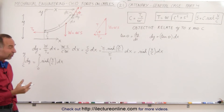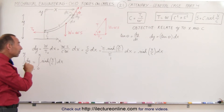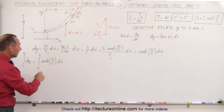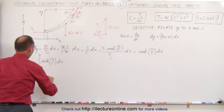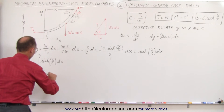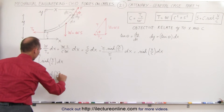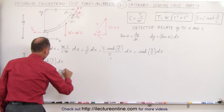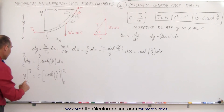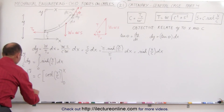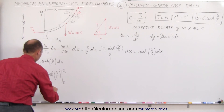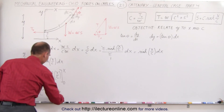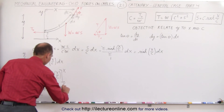It turns out, just like with sines and cosines — except the result here will be different — when we integrate the hyperbolic sine, we get the hyperbolic cosine. Since it's X over C, we're going to end up with a C there. So this becomes Y evaluated from C to Y, equal to C times the hyperbolic cosine of X over C evaluated from 0 to X. We end up with the upper limit minus the lower limit: Y minus C equals C times the hyperbolic cosine of X over C minus the hyperbolic cosine of 0.